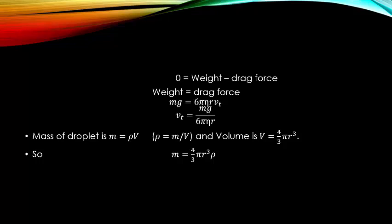Replacing V with (4/3)πr³ and inserting this value of mass into the terminal velocity equation, after simplification we get: vt = 2gr²ρ / (9η). This is the relation that gives us the terminal velocity of a fog droplet falling under the action of gravity.